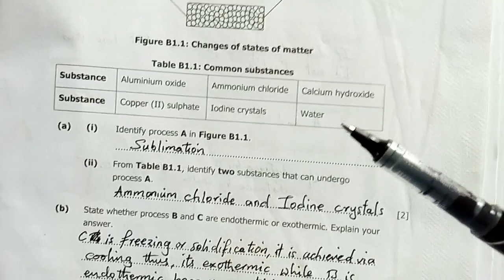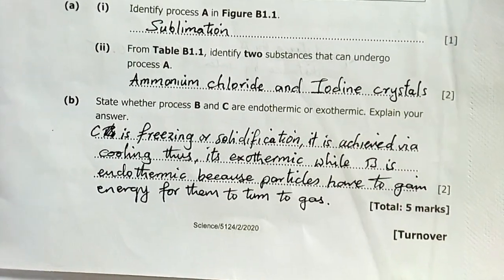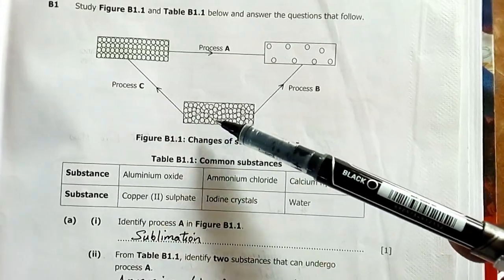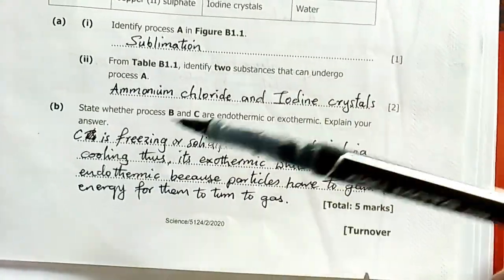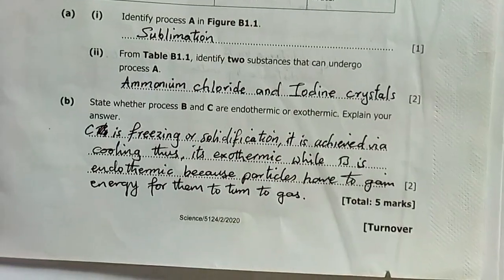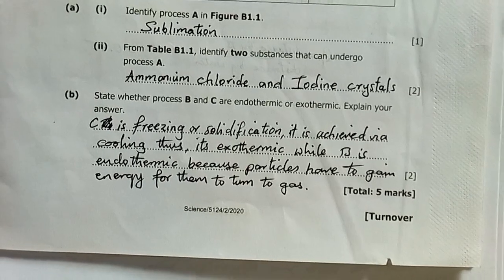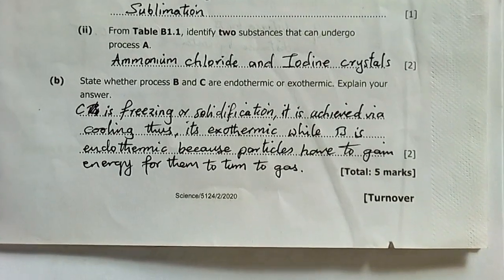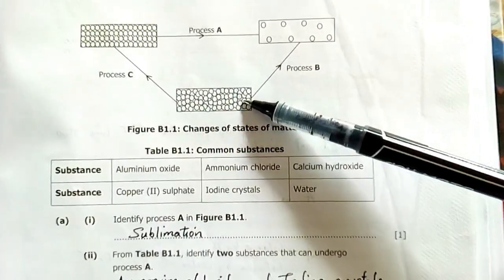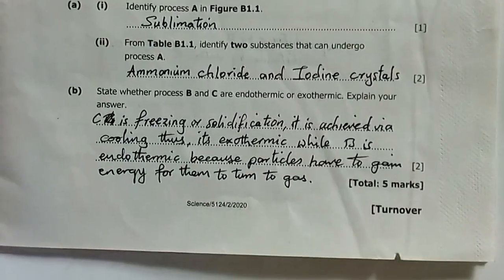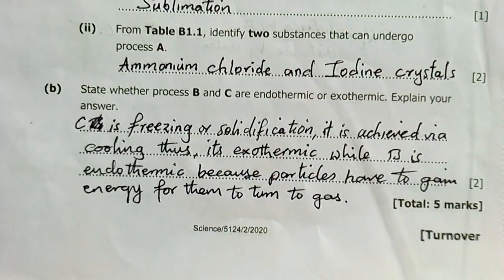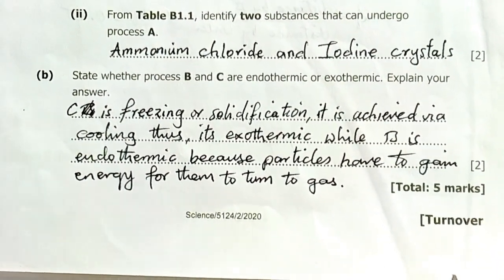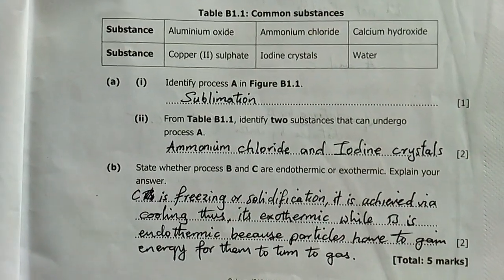Question B: State whether process B and C are endothermic or exothermic. C is change from liquid to solid, which is solidification or freezing. C is freezing, achieved via cooling, thus it's exothermic—the water has to lose heat to freeze. B is endothermic because particles have to gain energy for them to turn to gas. We've scored five marks from this question.